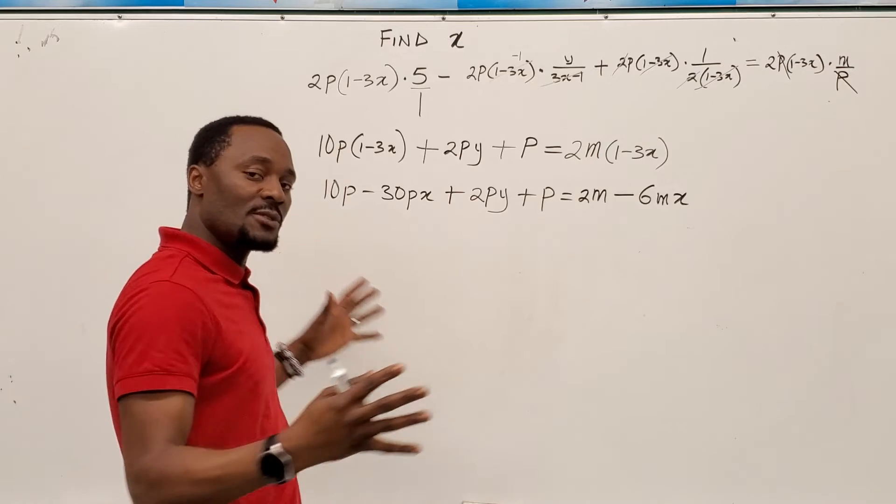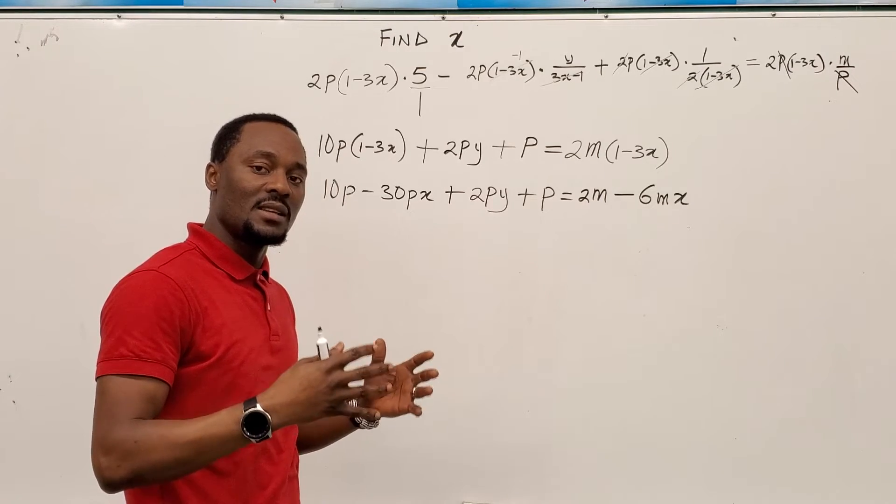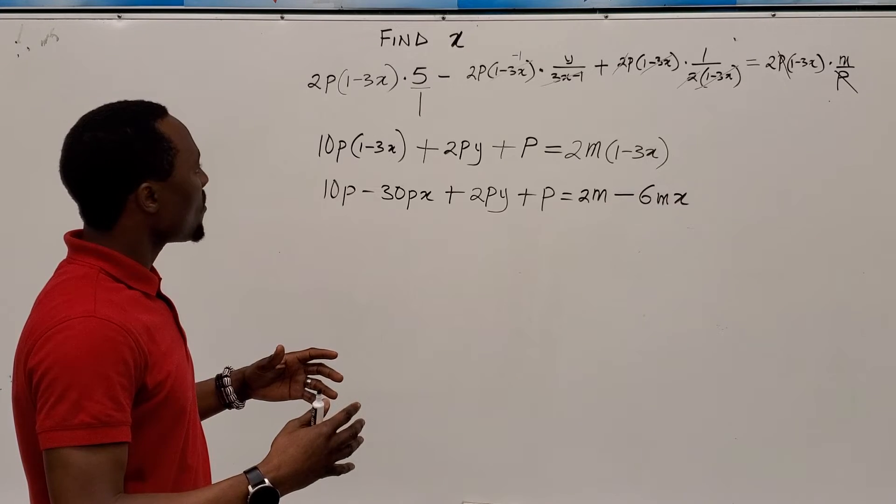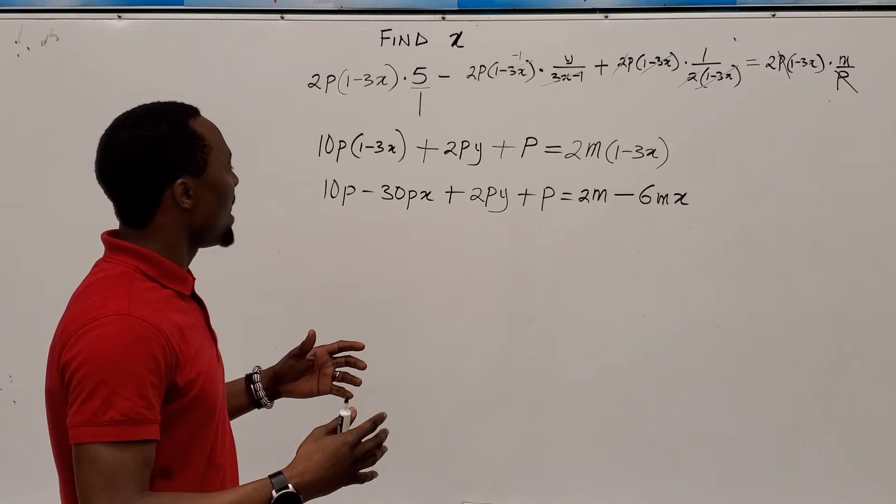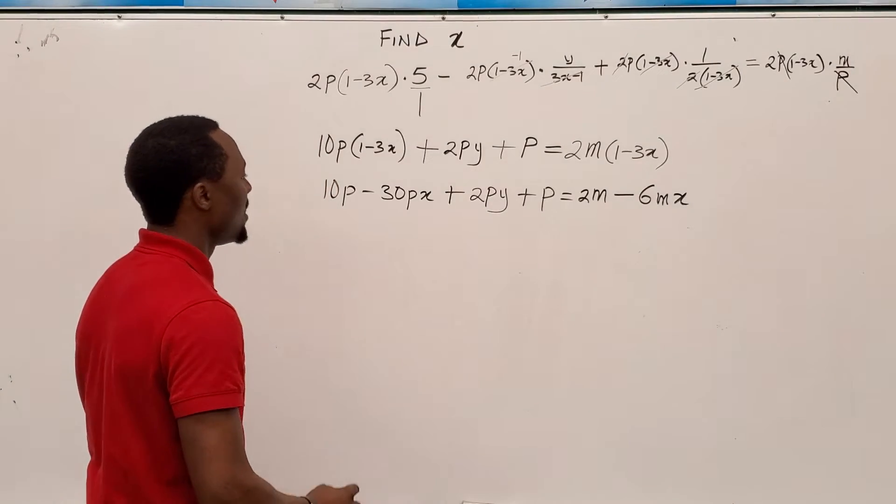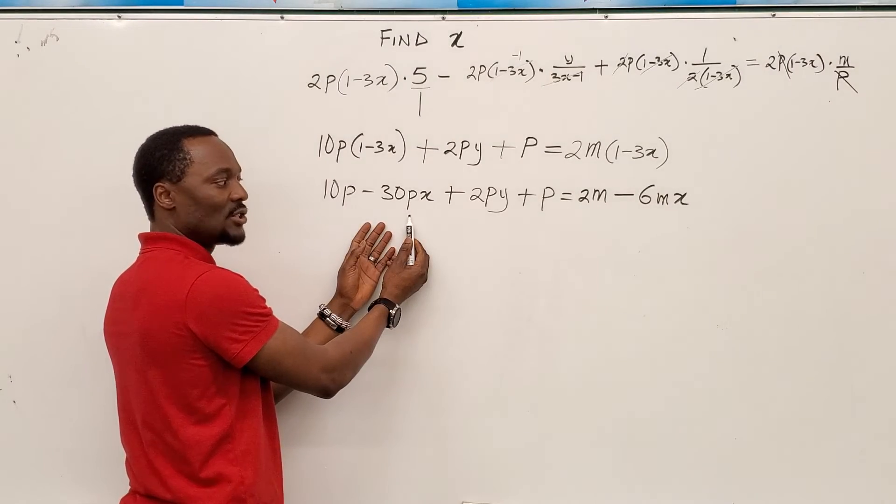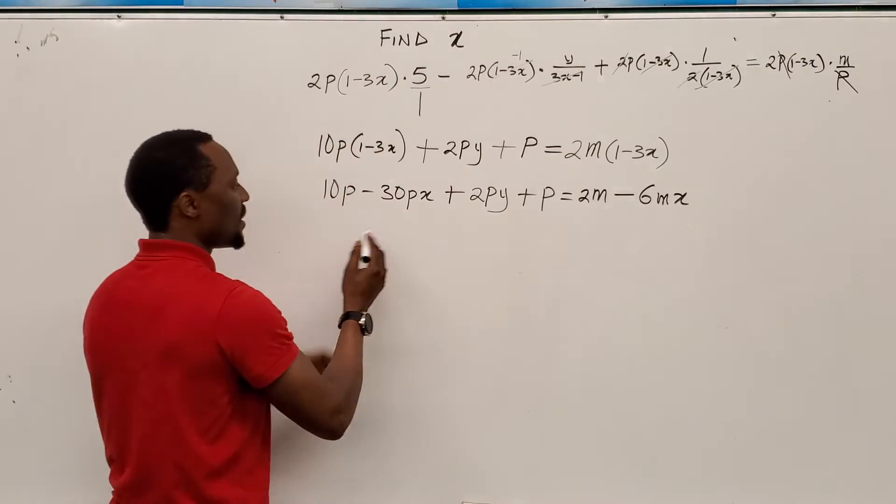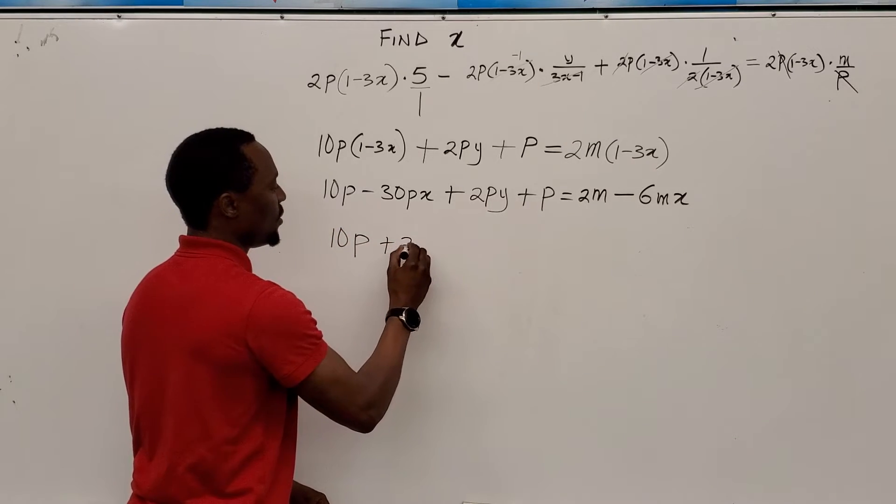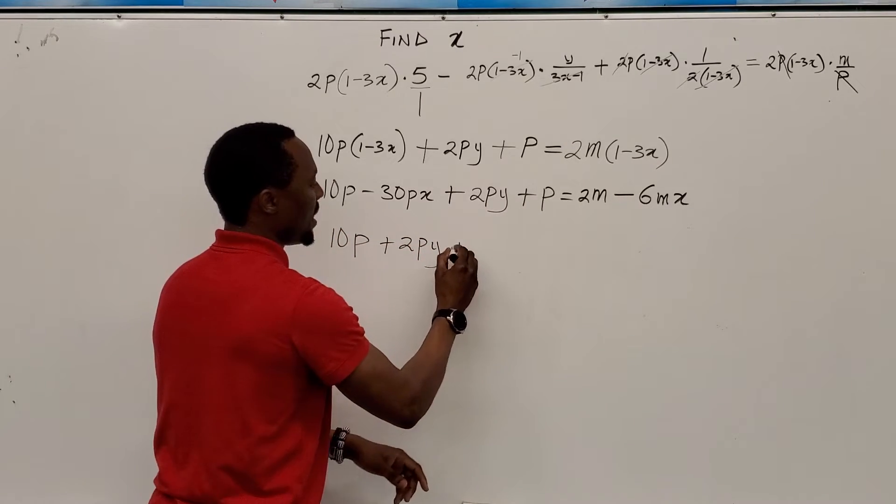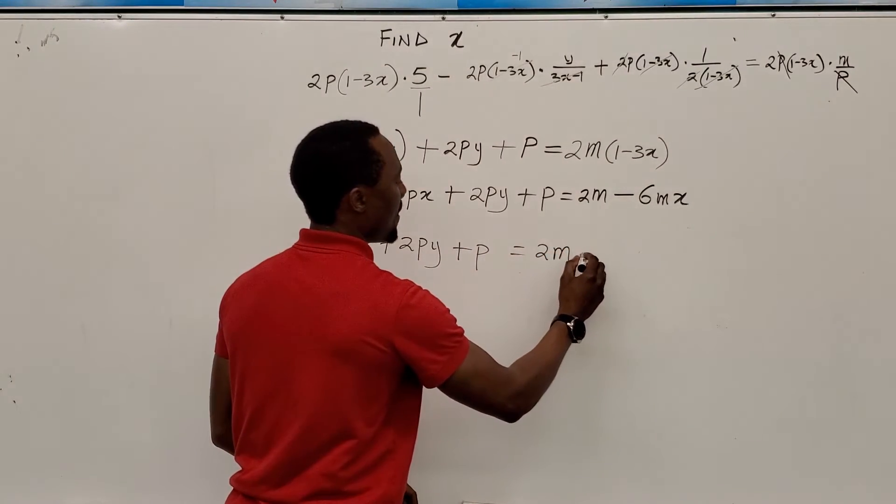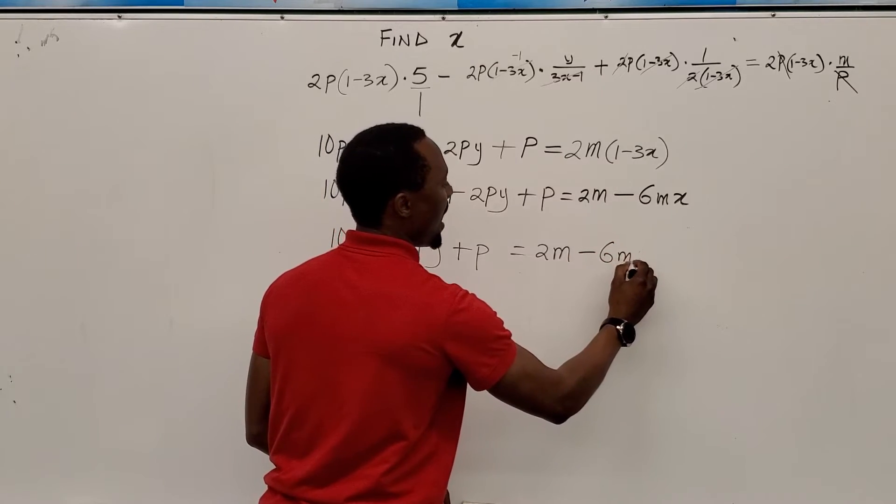Now, since we're trying to isolate x, let's put all the terms that contain x together. And how do we do that? We do that by moving. What would you like me to move? You know, I'm just going to move this over to this side. So it's going to be, I'm just going to add 30x to both sides. And when I do that, this leaves here. It becomes 10p plus 2py plus p equals 2m minus 6mx.